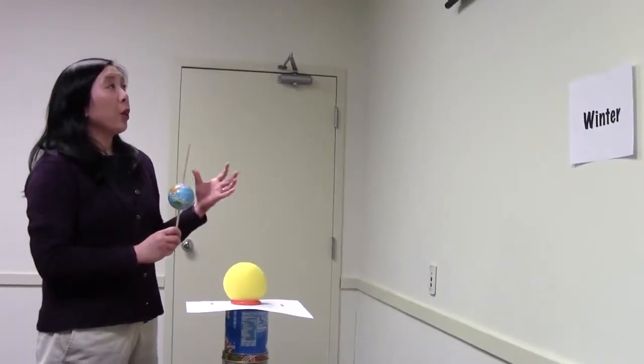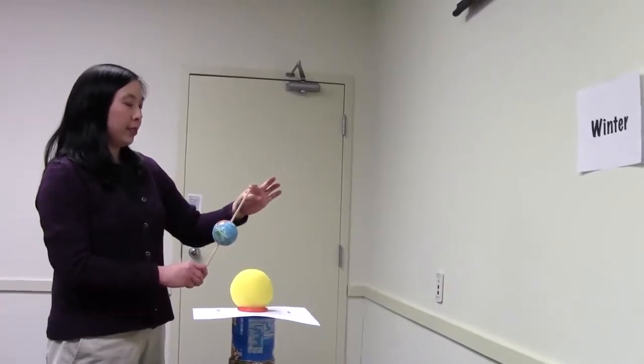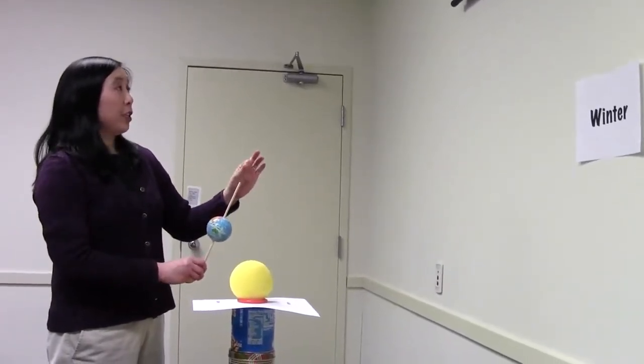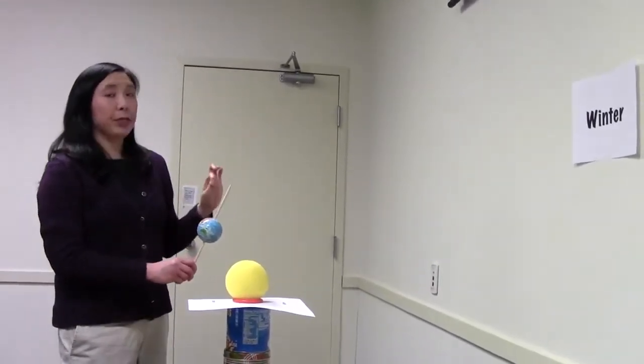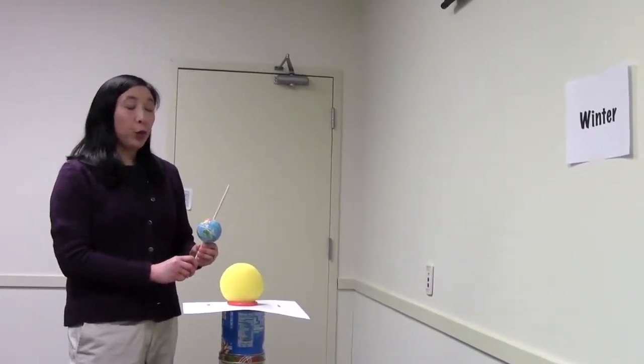The reason that we are using the entire wall as the reference point for tilting the axis of the Earth, rather than having a specific point in the room represent the North Star, is that the room is actually too small relative to the scale of the North Star compared to the Earth and Sun.